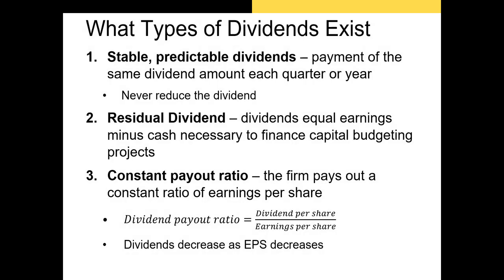The next type of dividend is the residual dividend. This kind of dividend occurs when a firm determines how much it will need to spend on capital budgeting projects. The remainder of earnings per share is returned to shareholders in the form of this residual dividend.